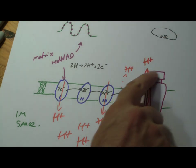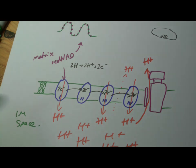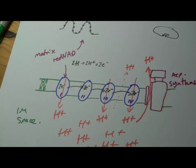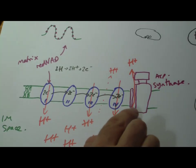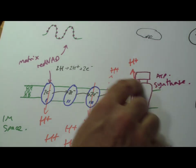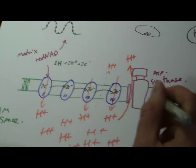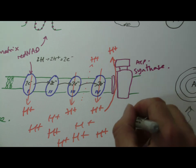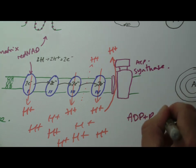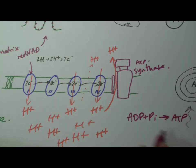And this channel on the ATP synthase molecule is able to utilize the energy of the hydrogens flowing through to generate ATP here. It makes it from, you should know this off by heart now, ADP plus an inorganic phosphate to ATP.